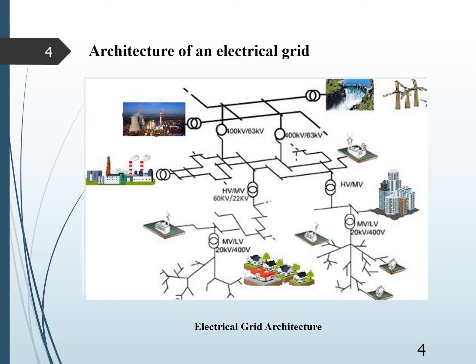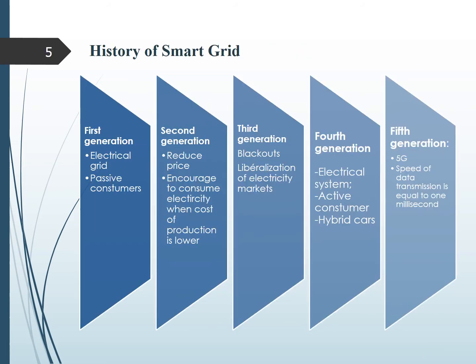Distribution network management is complex. Firstly, because of its architecture, which has a radial topology, taking the form as depicted in figure 1, with very long branches which exceed millions of kilometers. Secondly, the low number of available data and the increase in the demand for electrical energy on middle and low voltage level.